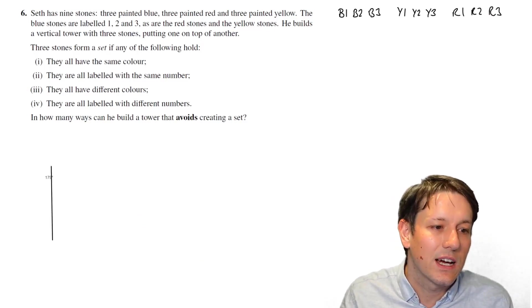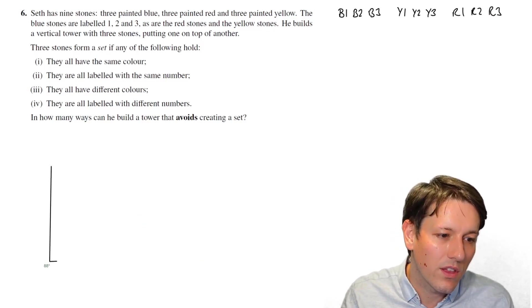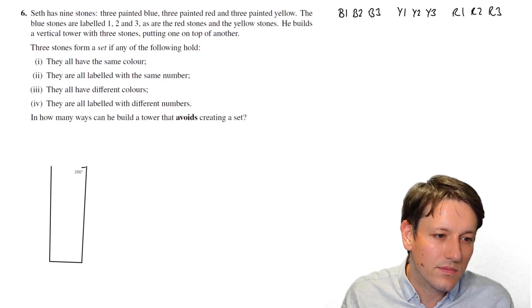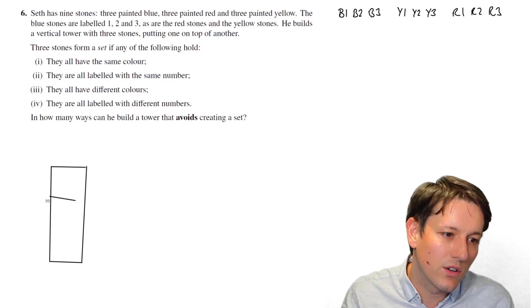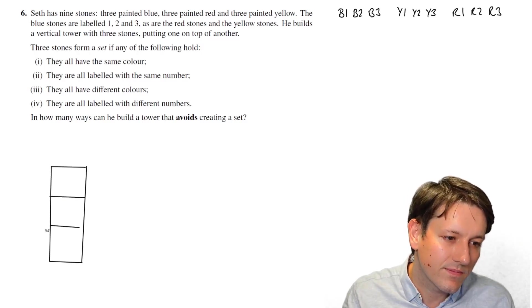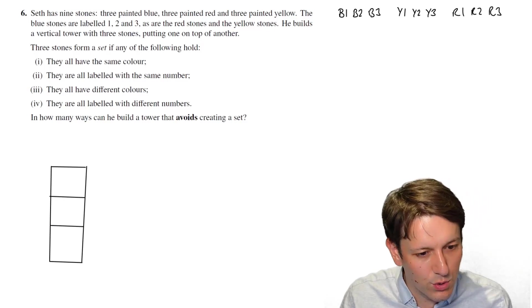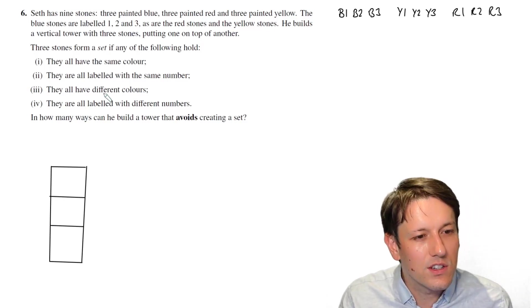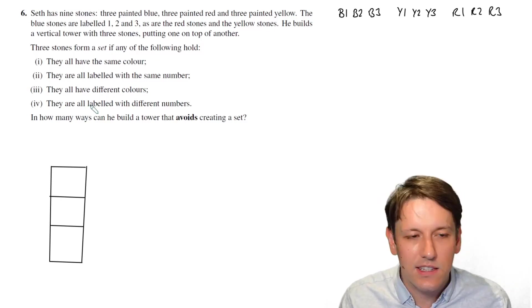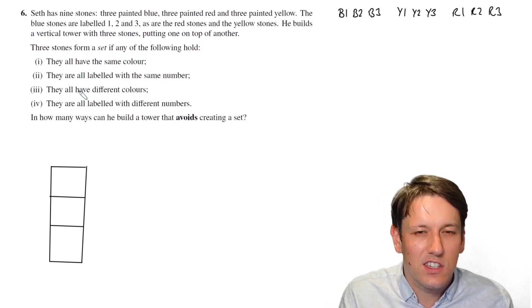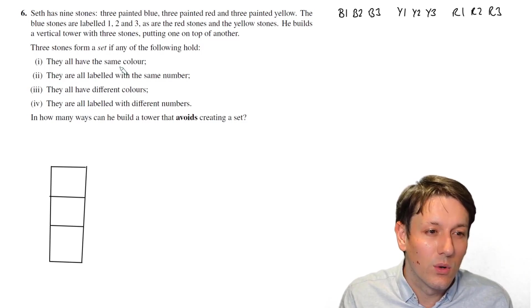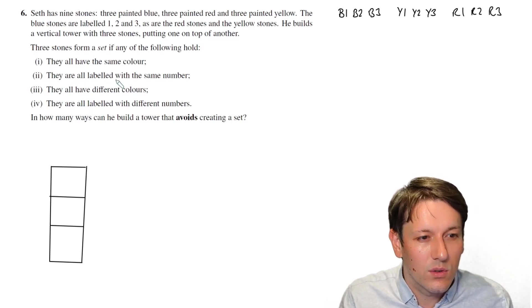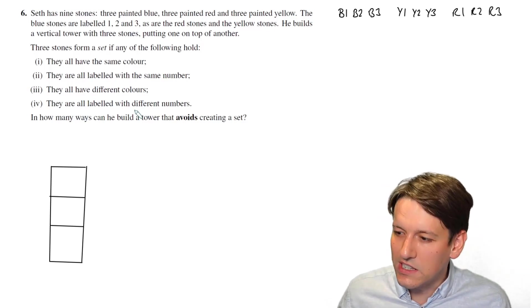He's going to build a vertical tower with three of these blocks, one on top of the other. They're going to form a set if one of these four conditions holds, and we want to avoid creating a set. So we want all of these conditions to be false: all have the same colour, all have the same number, all have different colours, all labelled with different numbers. None of these can be true.